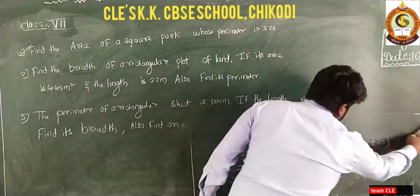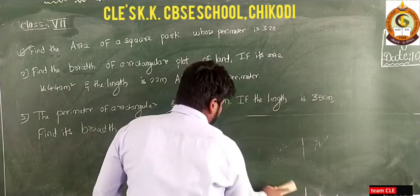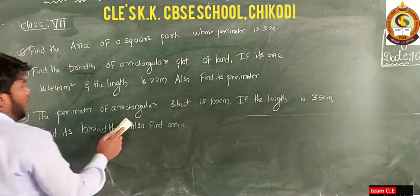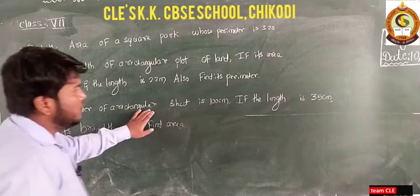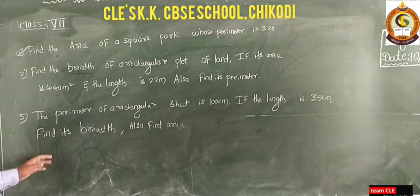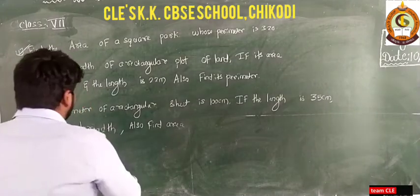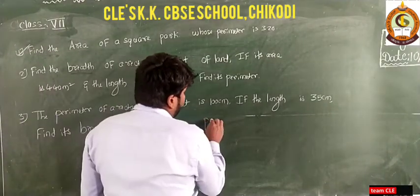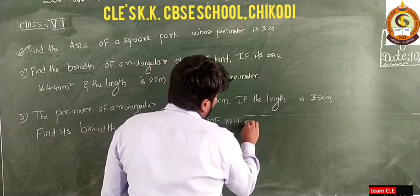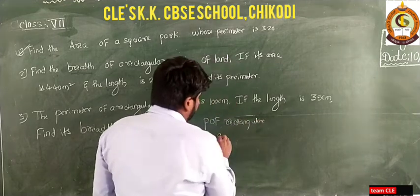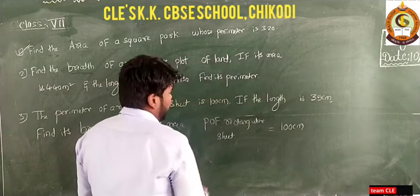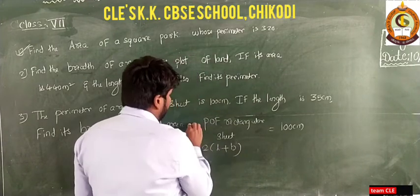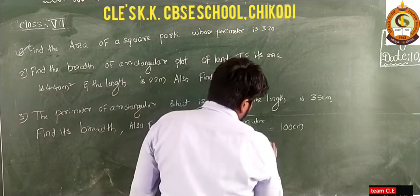Third question from your syllabus: the perimeter of a rectangular sheet is 100 centimeters; if the length is 35 centimeters, find its breadth and also find its area. Perimeter of rectangular sheet is given as 100 centimeters. The formula is two into L plus B, so two into L plus B equals 100 centimeters.